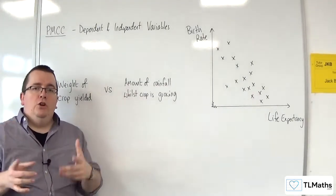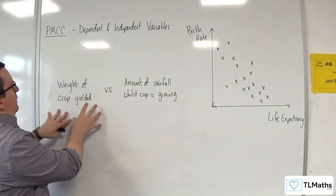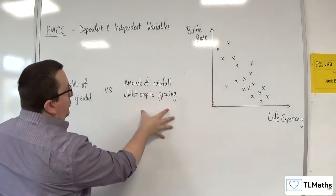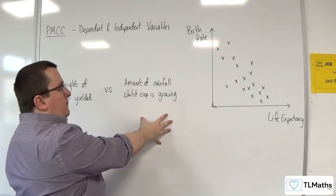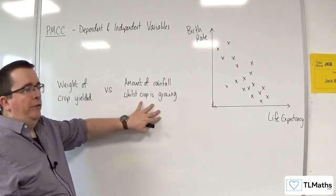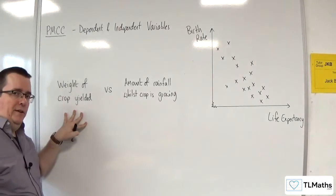But usually, it's easier if you read it this way. Does the weight of the crop yielded depend on the amount of rainfall whilst the crop is growing? Or, does the amount of rainfall whilst the crop is growing depend on the weight of the crop yielded?